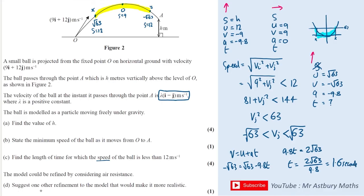The final question says the model could be refined by considering air resistance - suggest one other refinement to make it more realistic. You could say that the shape of the ball is considered so it's not treated as a particle, or you could mention the spin of the ball as well - that's another good answer. And we are done. I hope you found that useful. Please do like and subscribe, and let me know in the comments what type of question you'd like me to do next. Bye for now.